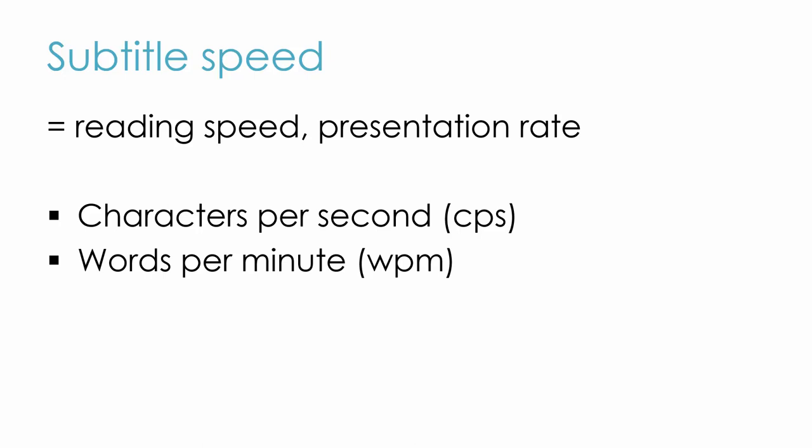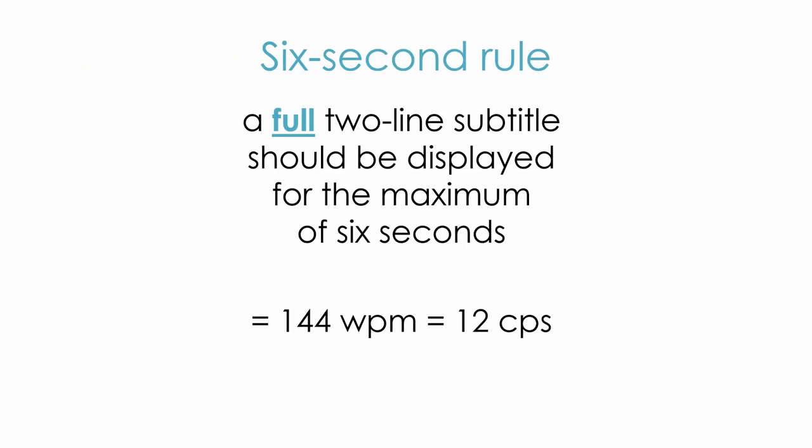Personally, I don't like the term reading speed as it is not so much the speed of reading but rather the speed at which subtitles are displayed. The most widely known rule on the speed of interlingual subtitles — that is subtitles translated from one language to another — is the 6 seconds rule. It says that a full two-line subtitle should be displayed on screen for 6 seconds in order for an average viewer to be able to read it, not longer because viewers will re-read it and not shorter because they will not have enough time to read it. The 6 seconds rule is equivalent to 144 words per minute or 12 characters per second.